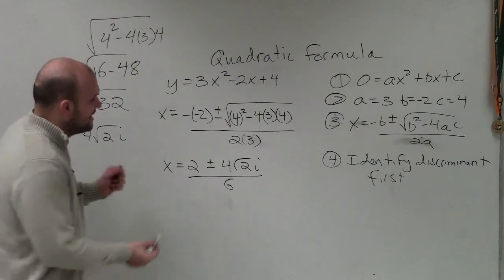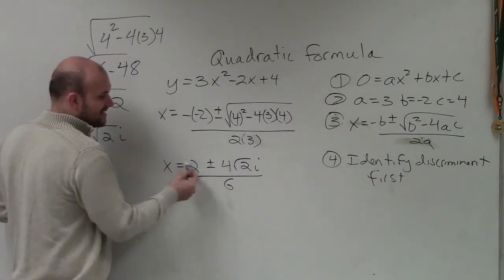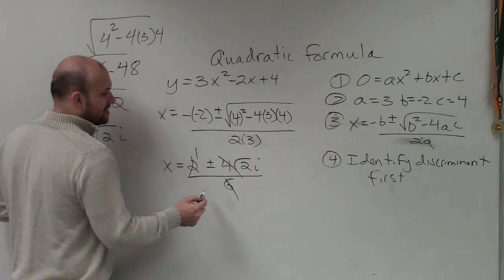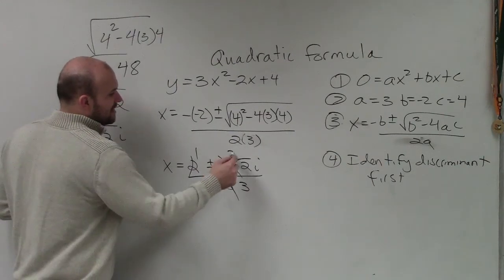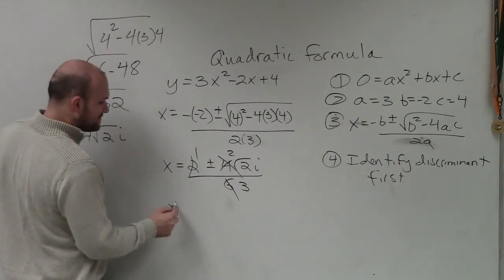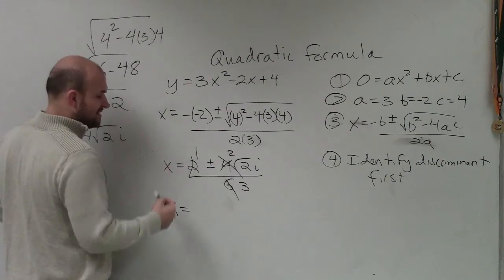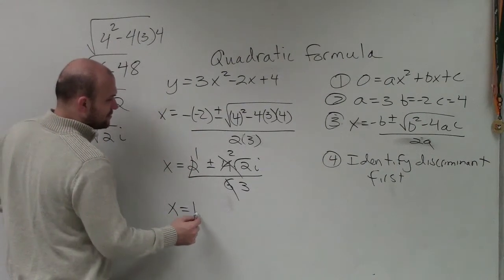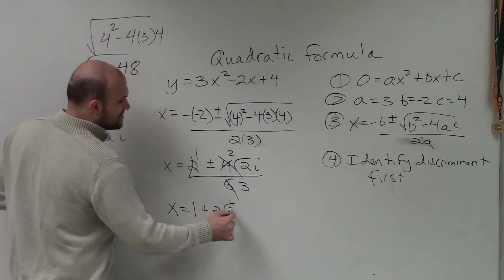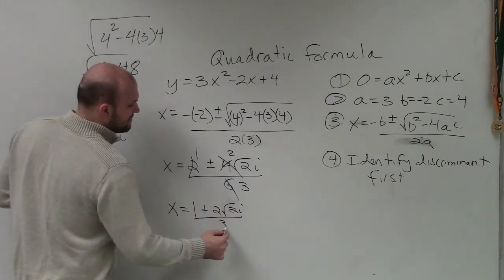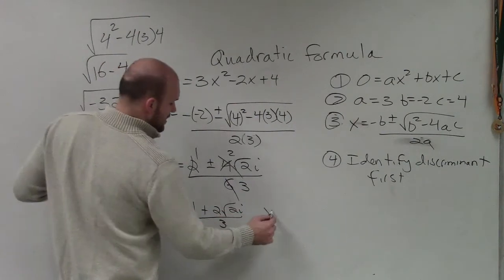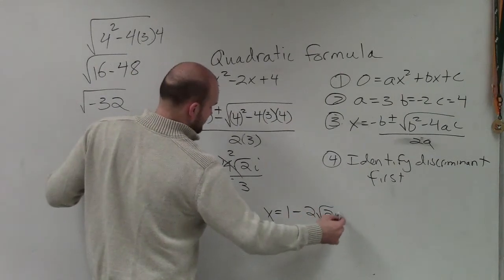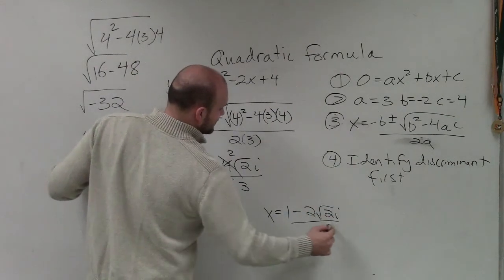To find the final answers, I can divide 2 out of everything: the 2 becomes 1, the 6 becomes 3, and the 4 becomes 2. So I have two imaginary solutions — they won't show up on the graph. x equals 1 plus 2 times square root of 2i, divided by 3, and x equals 1 minus 2 times square root of 2i, divided by 3.